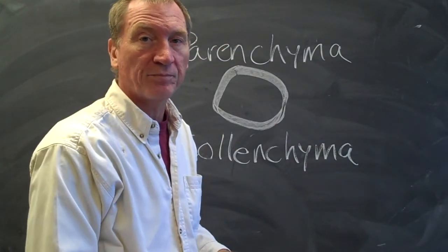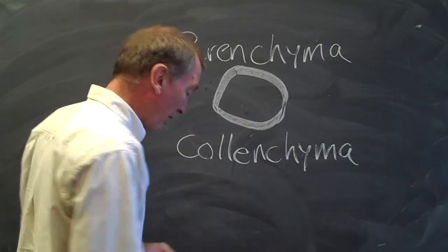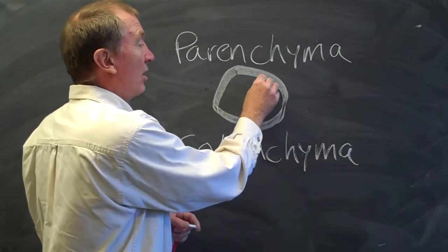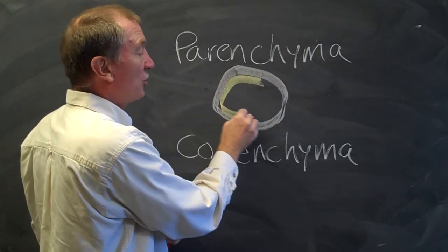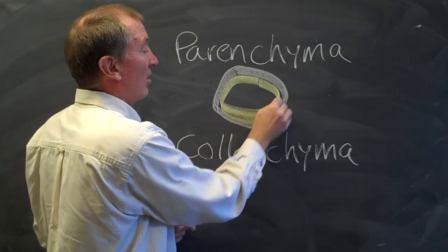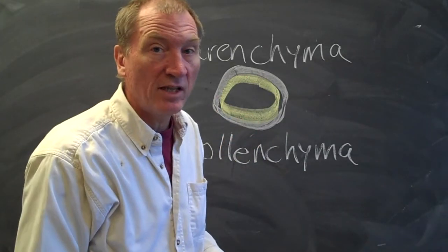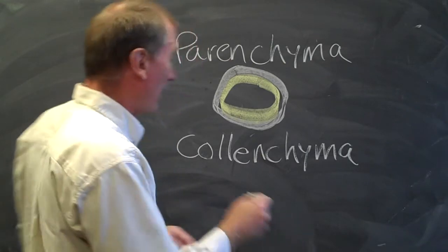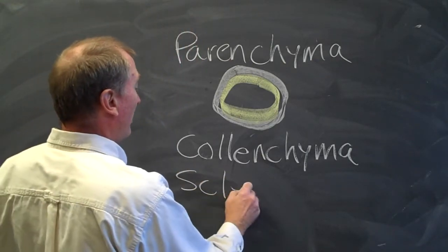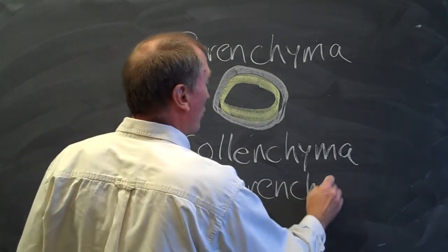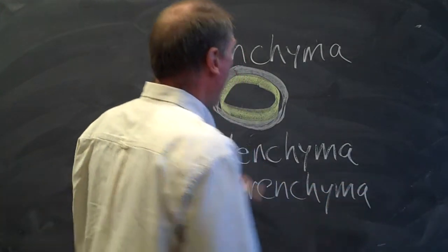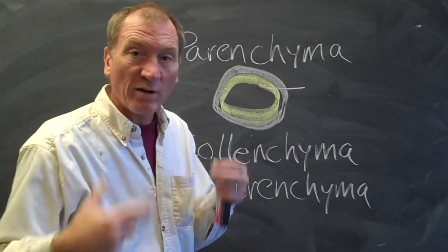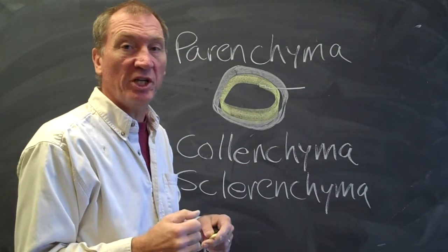And the third type of cell actually has a secondary cell wall that I'll show in yellow that's laid down on the inside and it's very rigid. This type of cell is called sclerenchyma, S-C-L-E-R-E-N-C-H-Y-M-A. And this sclerenchyma cell, the secondary wall here, has a lot of lignin in it. And it's the lignin that gives it rigidity.